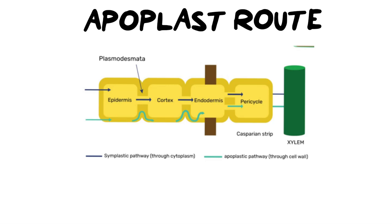Hi everybody and welcome back to Miss Angler's biology class. I am Miss Angler. In today's video we are going to be looking at the various routes that water takes in order to move from the root hair cell into the xylem, and we're going to look at the first route, which is called the apoplast route.